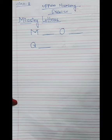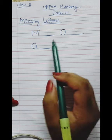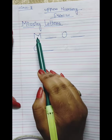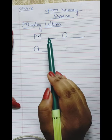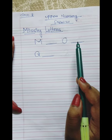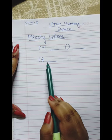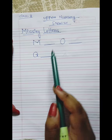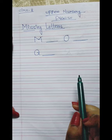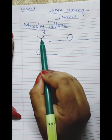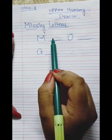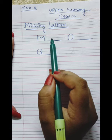So let me start the class. Today I will teach you M. What is written here? M. Then I made a dash, then O, then a dash, then Q, then a dash. So you have to tell me which letters will be placed here. Start — M. After M comes N.